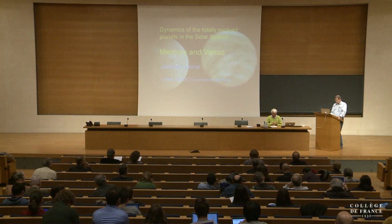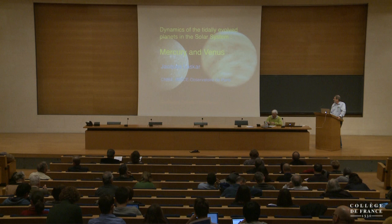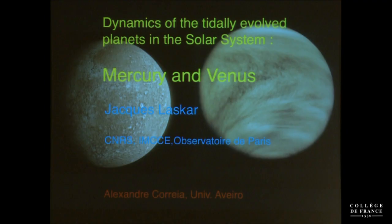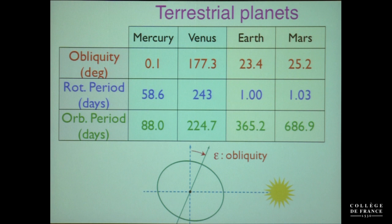Thanks for the introduction. We have spoken about the moon, which is tidally evolved and presents the same face toward the earth. Here I will speak about the planets that are tidally evolved: Mercury and Venus. But as you know, none of them is in a one-to-one spin-orbit resonance. When you look to the terrestrial planets in the solar system, you have really two different kinds of planets.